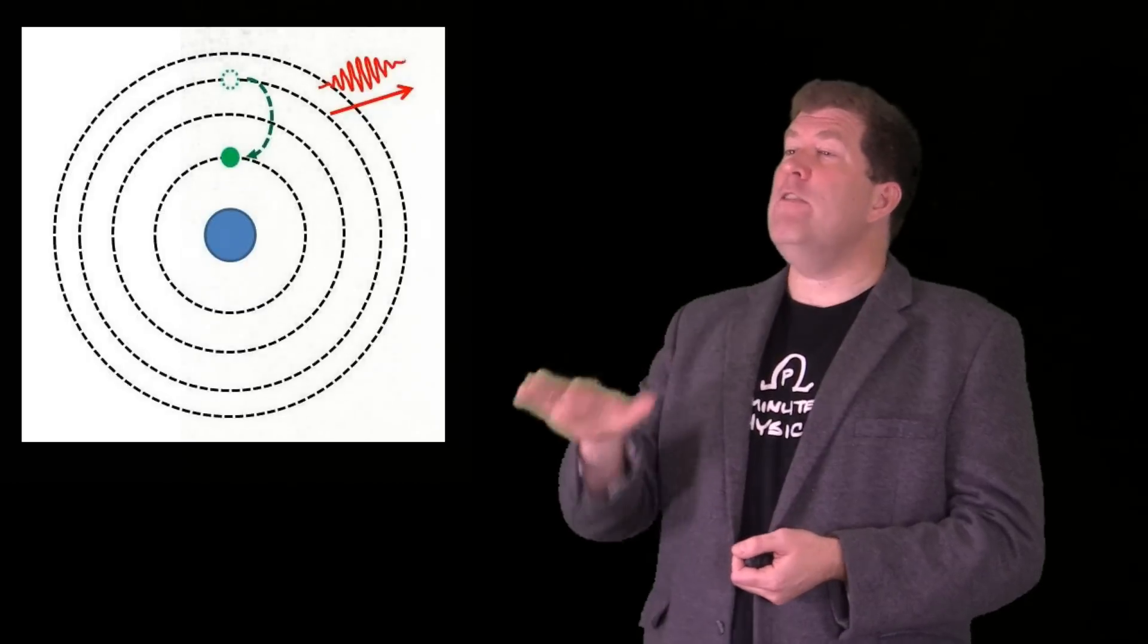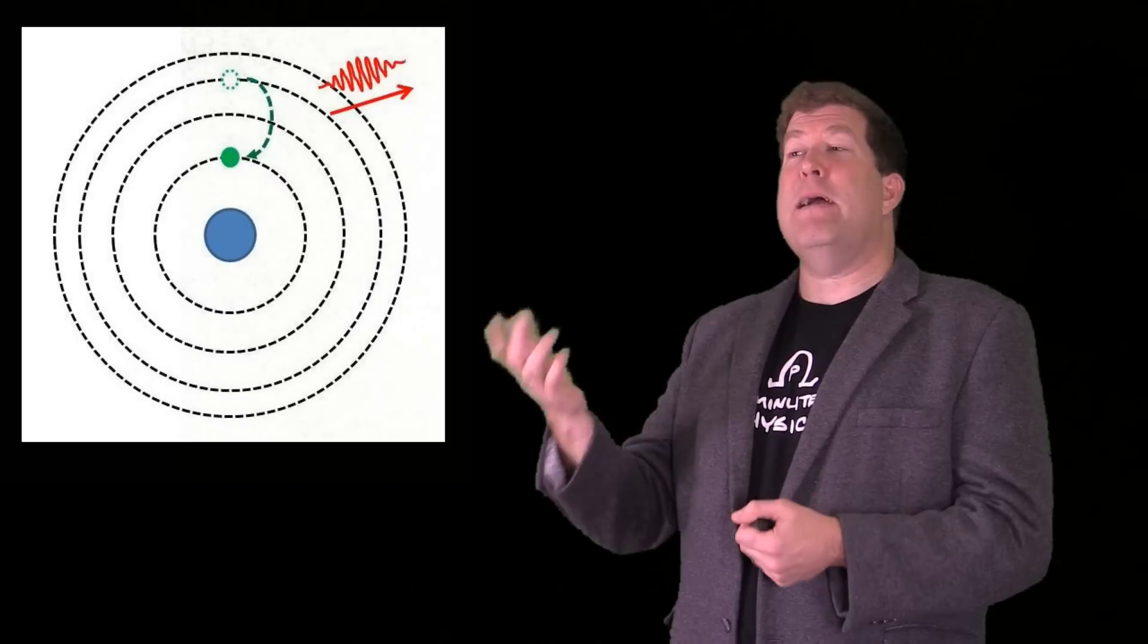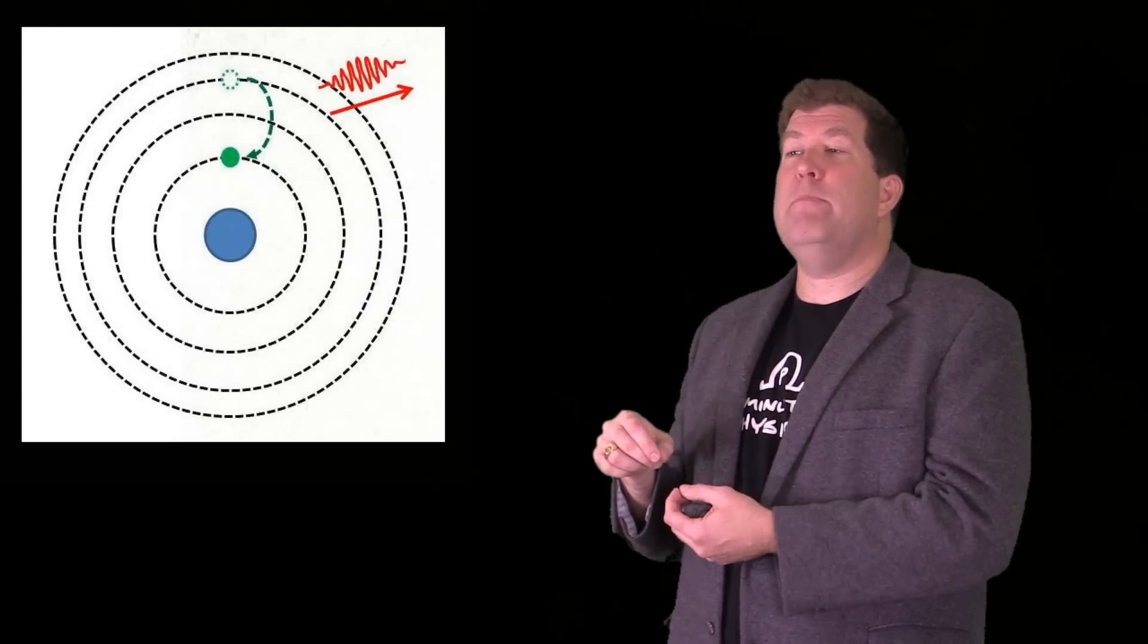Bohr's model fixes Rutherford's problems. It also is brilliant for explaining the spectrum of light emitted by hydrogen. But it has one little problem, which is there's no obvious reason why those orbits should be special.